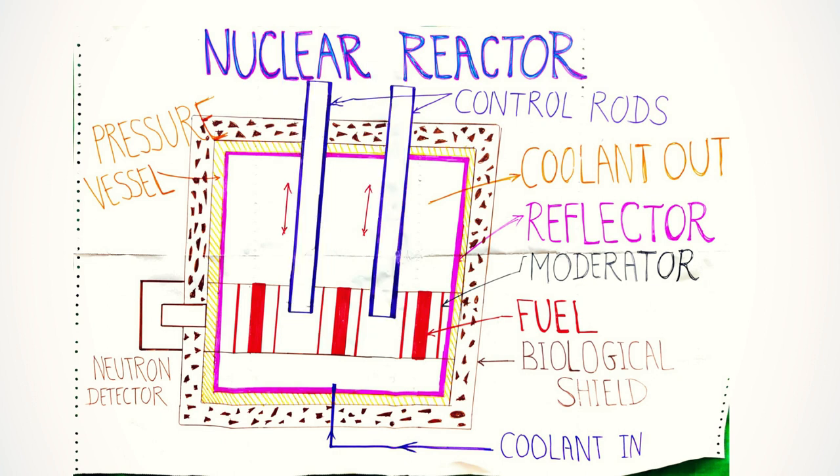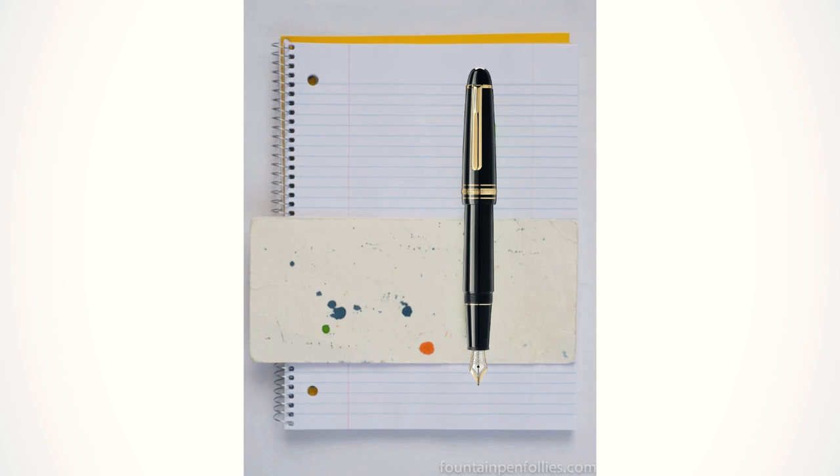The action of control rods can be very well compared with the action of blotting paper which absorbs extra ink without spreading.